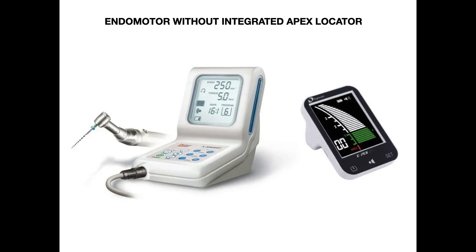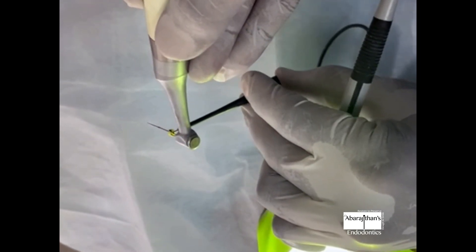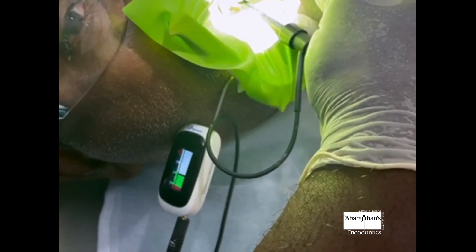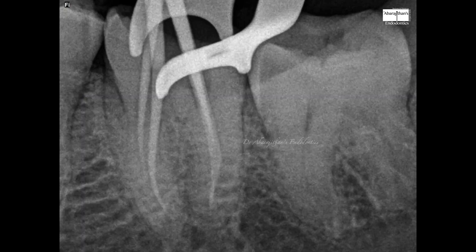For those who have an older type endomotor and a separate apex locator and are wondering how to integrate this function without an integrated endomotor — the good news is you can still integrate it in a very simple way. The apex locator lip clip is placed in the patient's lip, whereas the file holder is attached to the rotary file placed in the endomotor. As you can see, a separate endomotor and a separate apex locator can be integrated using this simple method, so that you are in control of your working length and more accurate towards the biological working length than following older radiographic methods.